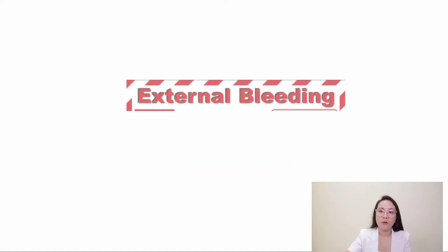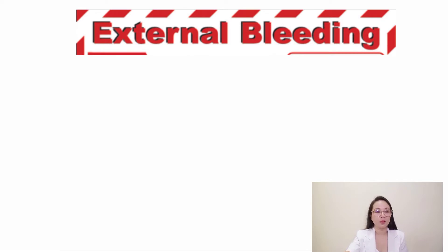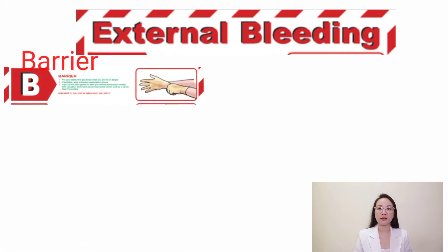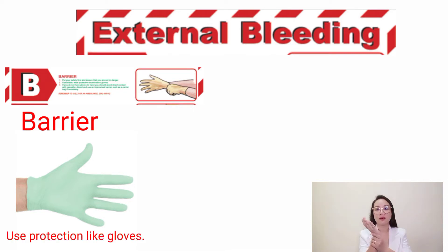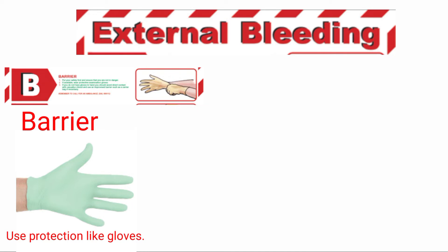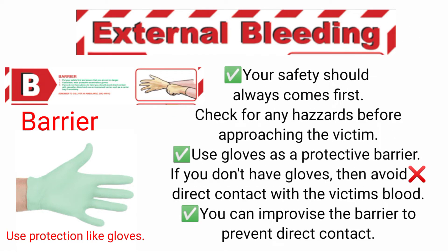The first aid treatment for external bleeding: always try to use a protective barrier. Locate the source of bleeding and use gloves as a protective barrier to avoid contamination and to protect yourself, because your safety should always come first. Check for any hazards before approaching the victim. If you do not have gloves, avoid direct contact with the victim's blood and improvise a barrier to prevent direct contact.